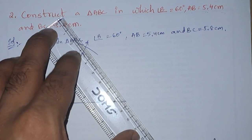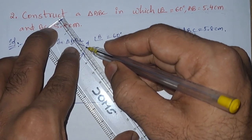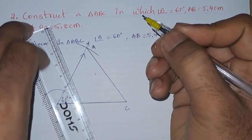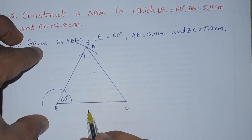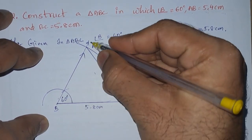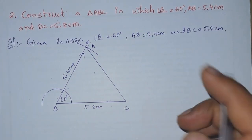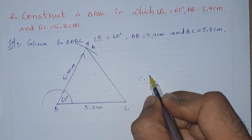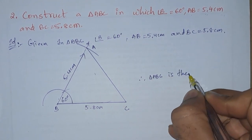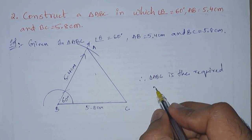This is the point A. We need to join this point A with C. So this is our point A, and you know the measurements: B to C is 5.8 centimeters and B to A is 5.4 centimeters. Finally, we can write: therefore, triangle ABC is the required triangle.